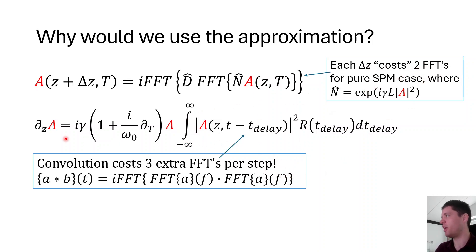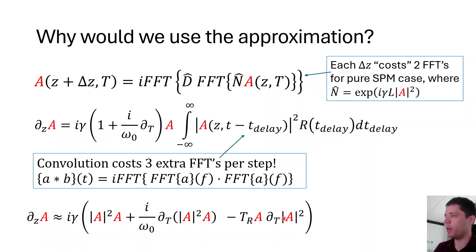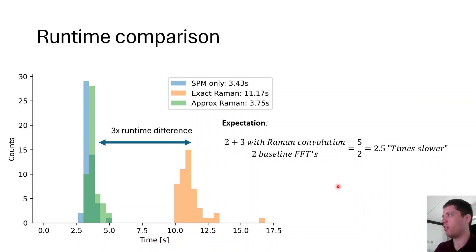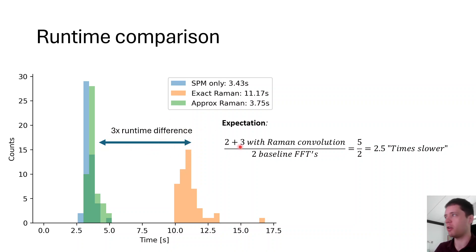We still have two Fourier transforms for the basic step, plus three additional ones for exact Raman, whereas the approximation just needs a gradient. I verified this experimentally: the basic and approximate versions ran in almost the same time, while the exact Raman implementation was roughly three times slower — consistent with the expected 5/2 = 2.5× slowdown from the extra Fourier transforms.